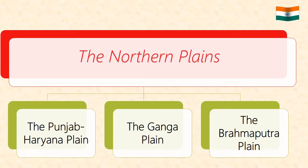In the northern plains we have three parts: the Punjab-Haryana plain, the Ganga plain and the Brahmaputra plain.